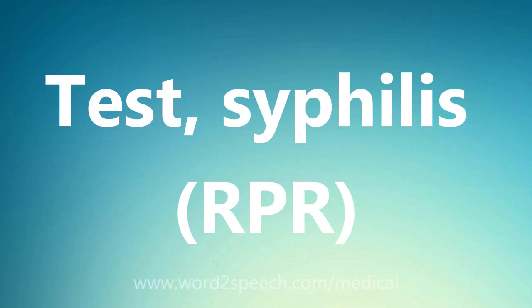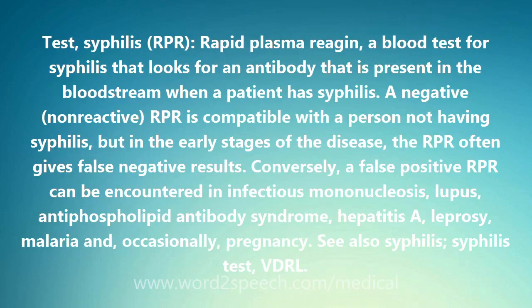Test: Syphilis RPR. Rapid Plasma Reagin — a blood test for syphilis that looks for an antibody that is present in the bloodstream when a patient has syphilis.